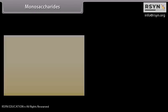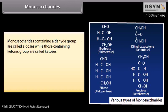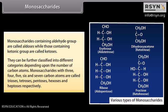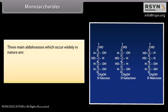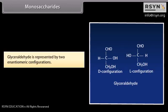Monosaccharides containing aldehyde group are called aldoses, while those containing ketonic group are called ketoses. They can be further classified depending upon the number of carbon atoms. Monosaccharides with three, four, five, six and seven carbon atoms are called trioses, tetroses, pentoses, hexoses and heptoses respectively. Three main aldohexoses which occur widely in nature are D-glucose, D-galactose and D-mannose. The letter D represents the configuration as derived from glyceraldehyde, which is represented by two enantiomeric configurations.